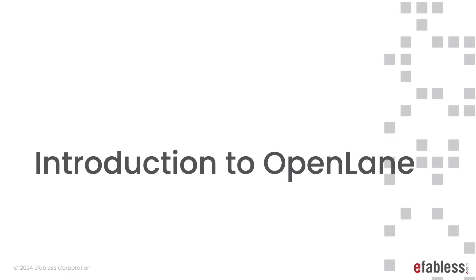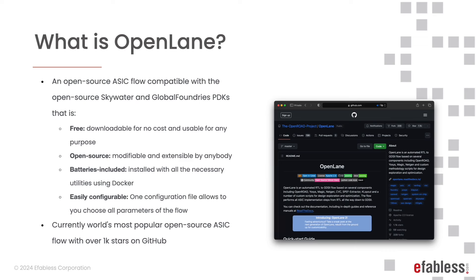The first question many of you might have is: what is OpenLane? Well, OpenLane is the world's most popular ASIC implementation flow, with over 1,000 stars on GitHub and nearly 3,000 unique cloners a month. It is compatible with the open source Skywater and Global Foundry's PDKs. OpenLane is free, both of costs and of restrictions — that also means it's open source, so anybody is able to modify and extend it.